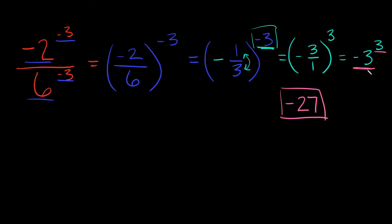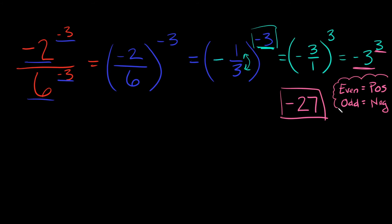How do we know the answer is negative? Whenever we have a negative base, the exponent determines whether the result is positive or negative. If the exponent is even, the answer is positive. If the exponent is odd, the answer is negative. This rule applies whenever you have a negative base.